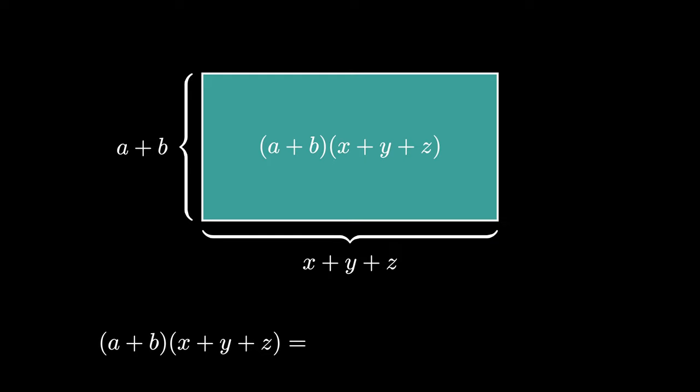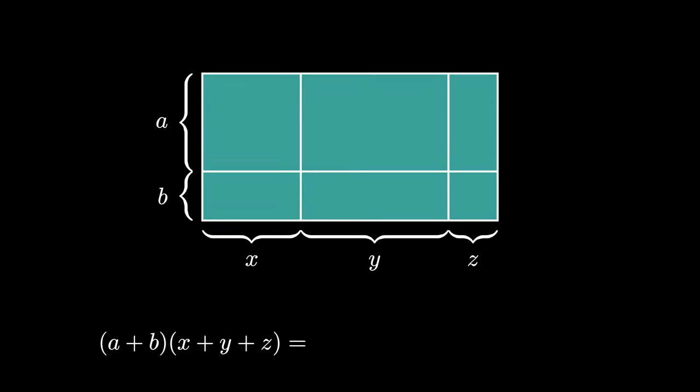On the other hand, we can again divide up the side lengths of this rectangle. The width can be divided into side lengths of A and B, and the length can be divided into 3 segments where the lengths are X, Y, and Z respectively. This breaks the rectangle into 6 smaller rectangles.